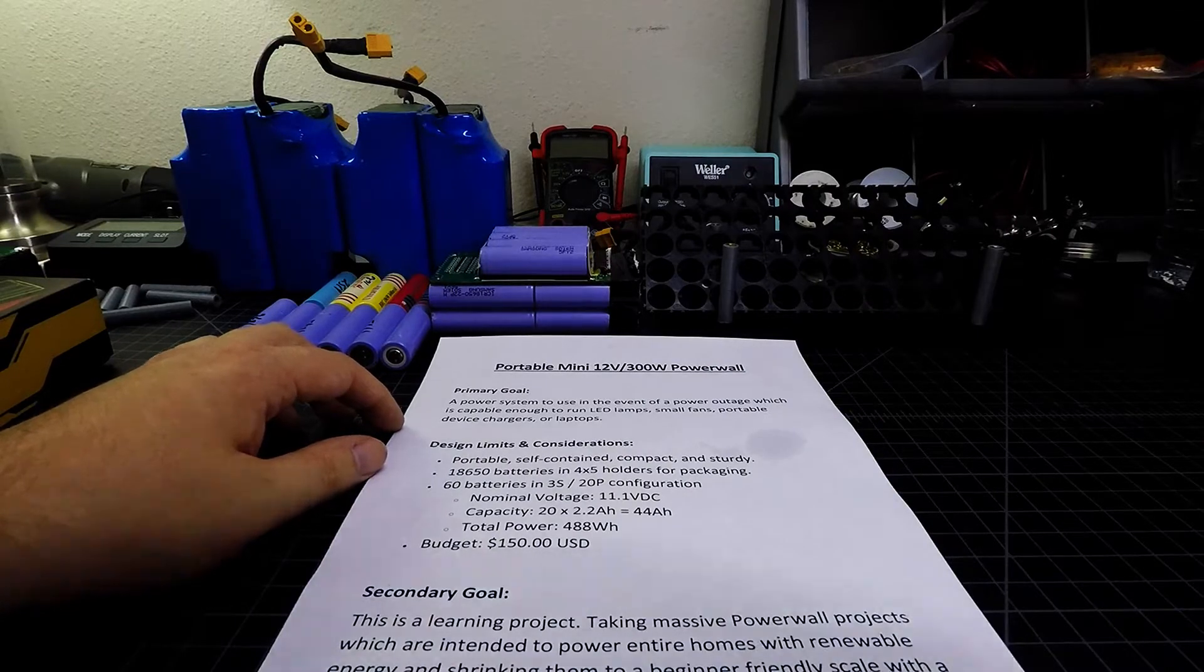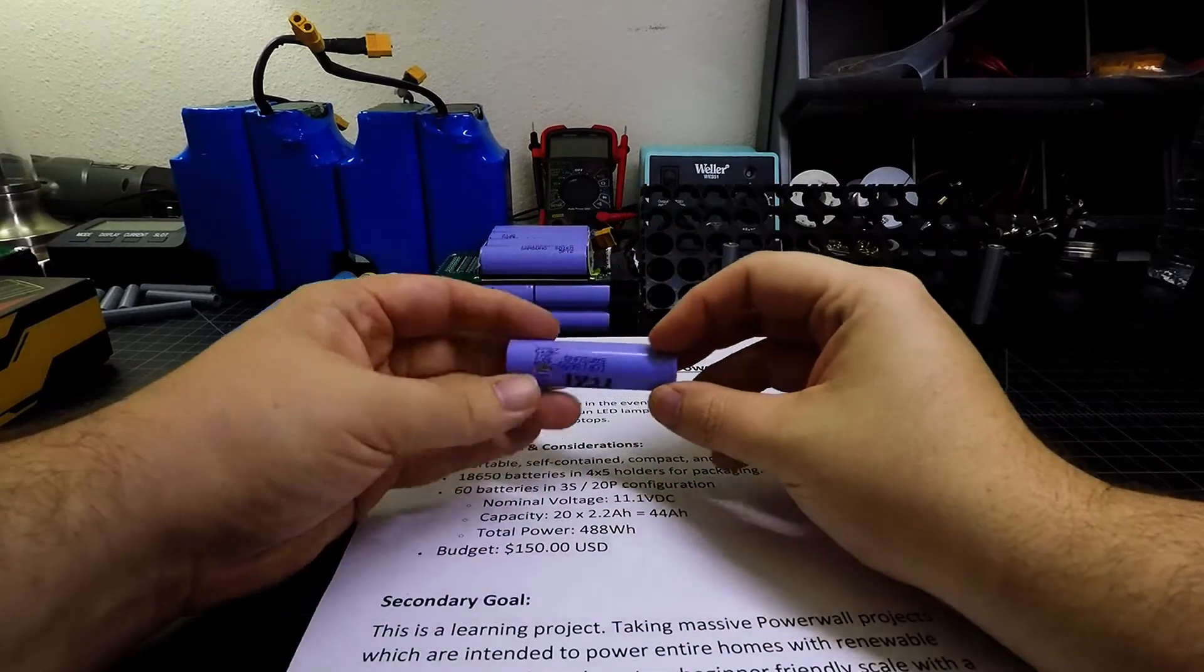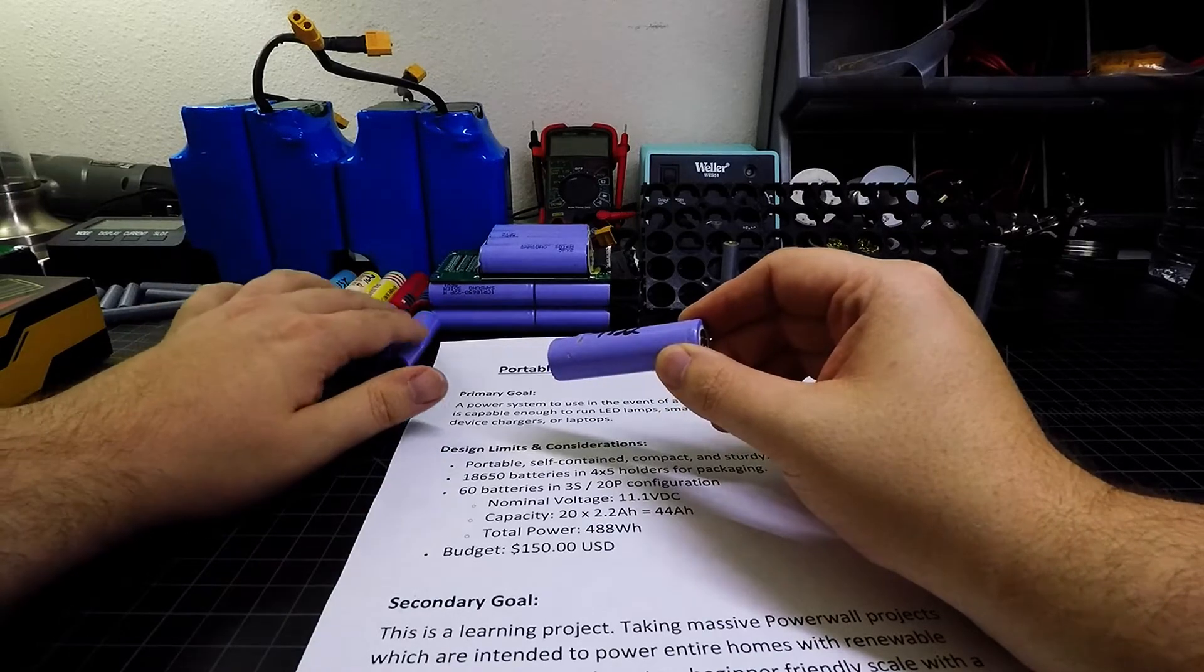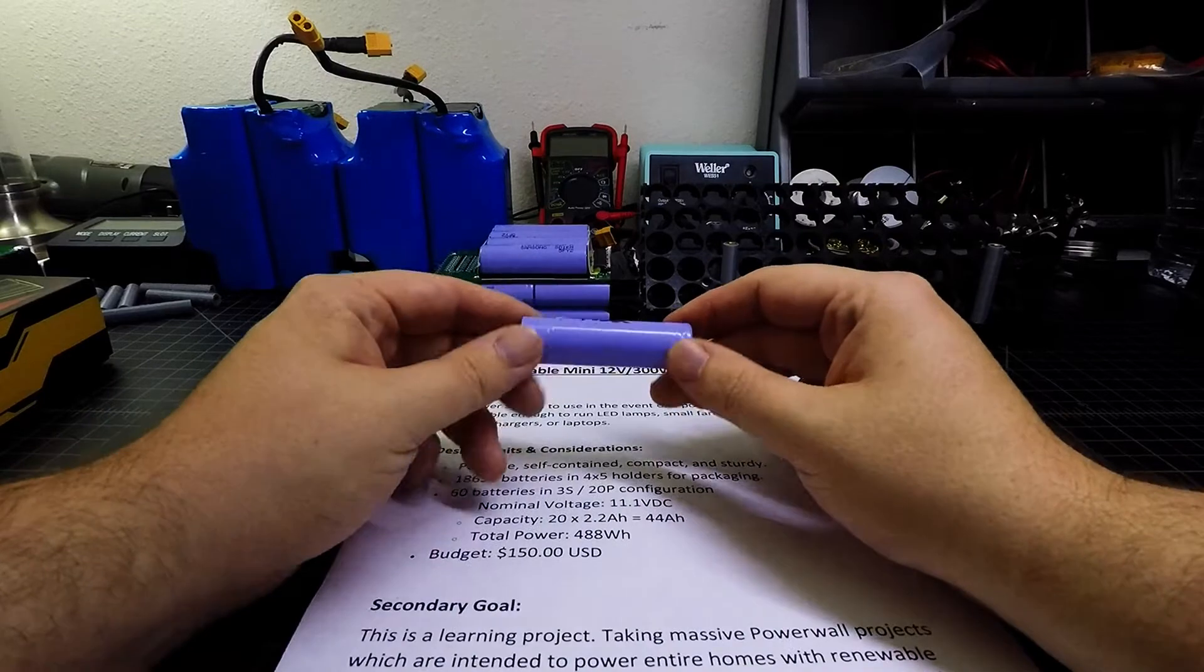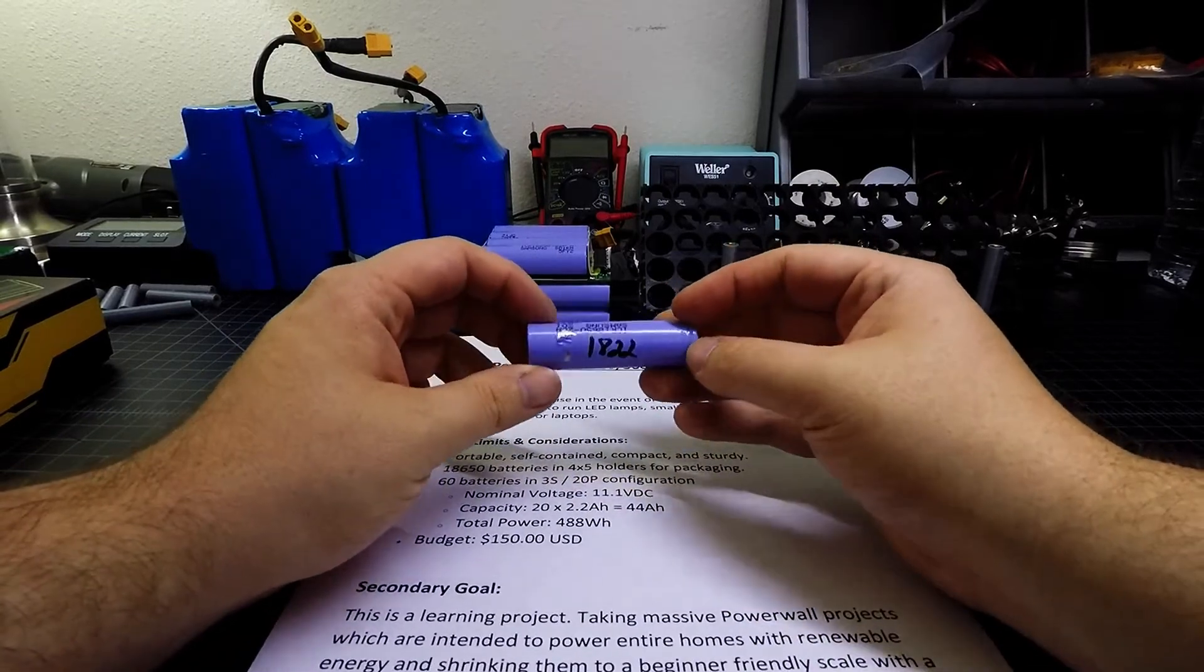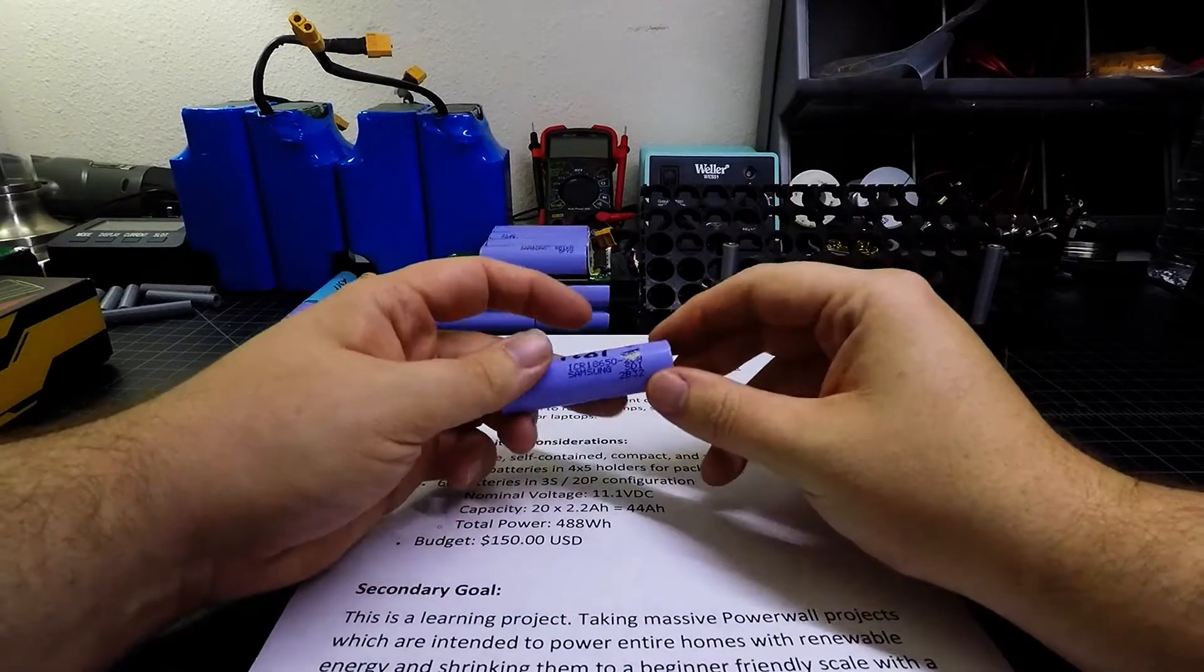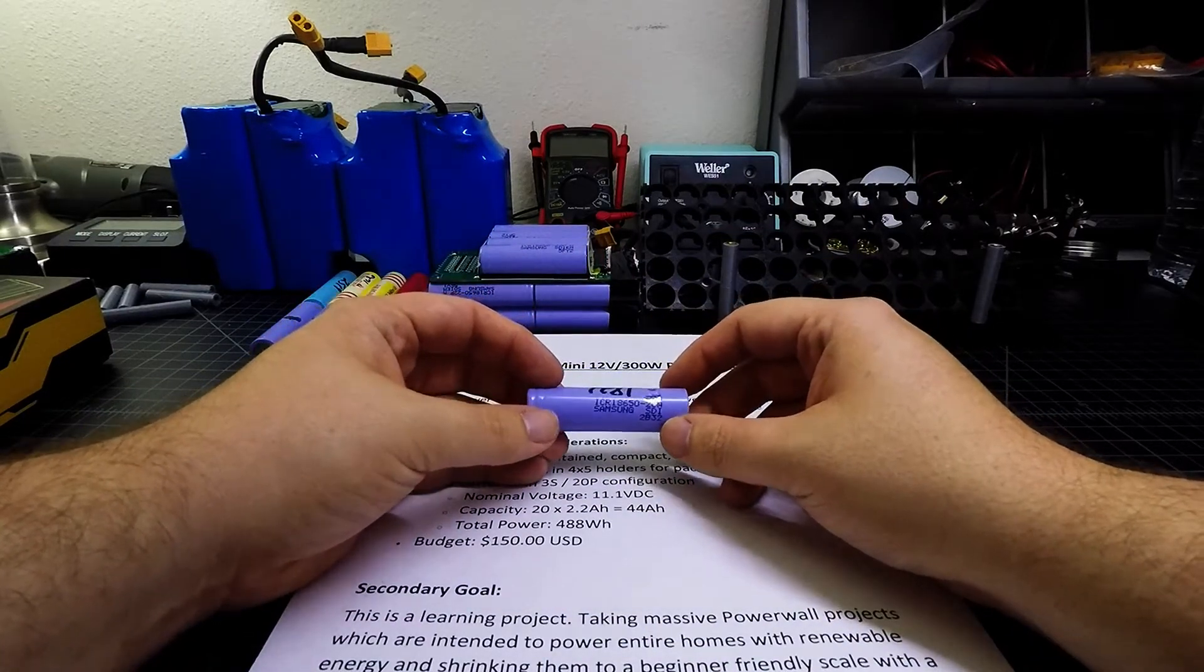So let's talk about sourcing some batteries here. These are the 18650 cells and these purple cells here that are already loose, I harvested these from a used Dell laptop battery pack that was decommissioned for whatever reason. And so I tore it open, pulled out the cells and I boogered up the sleeve a little bit, but that's just fine.